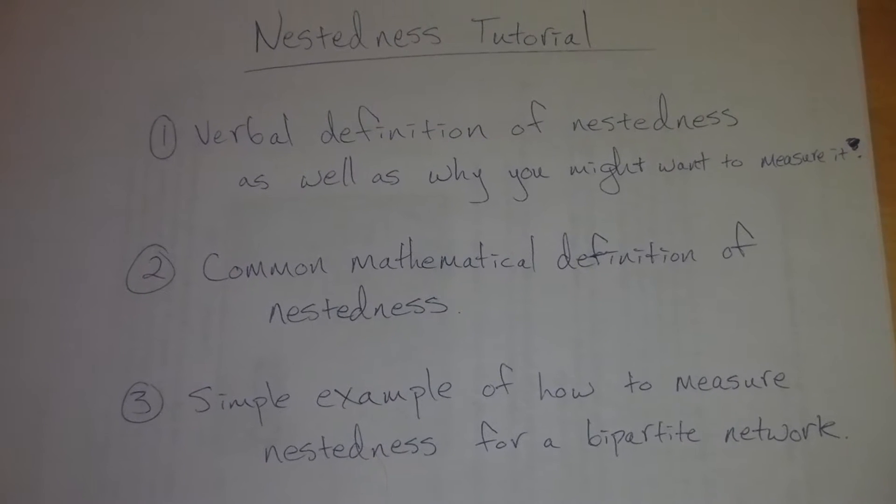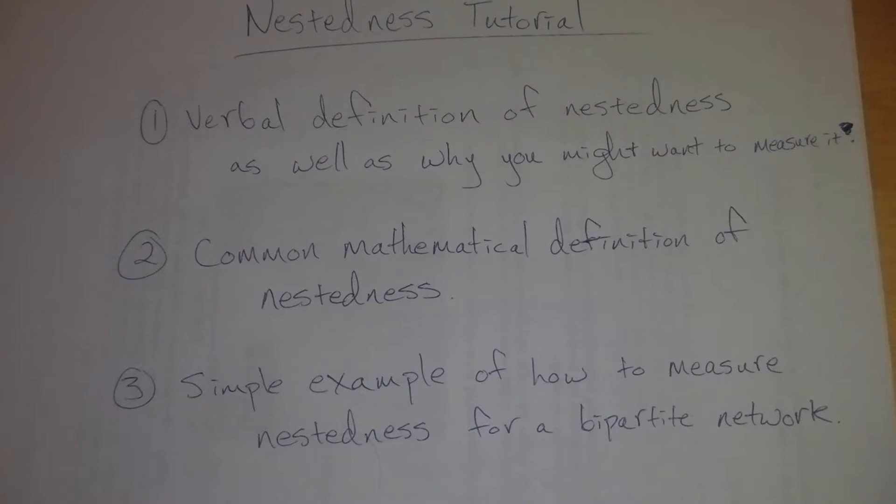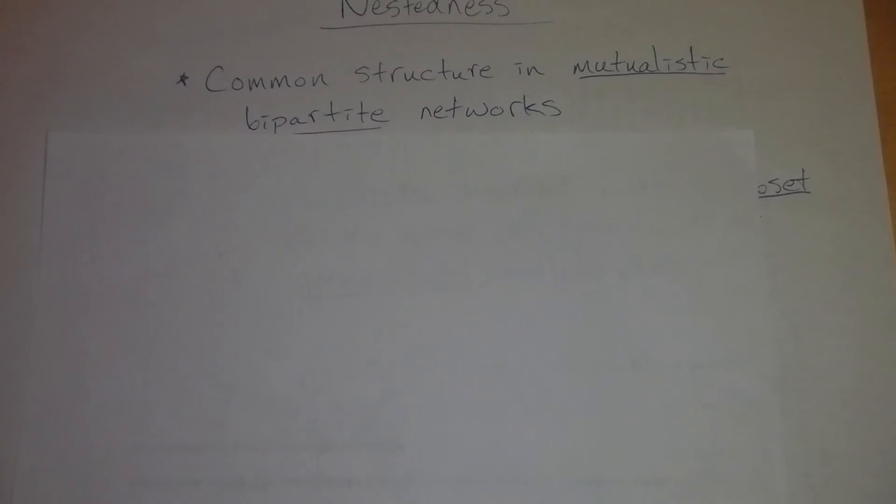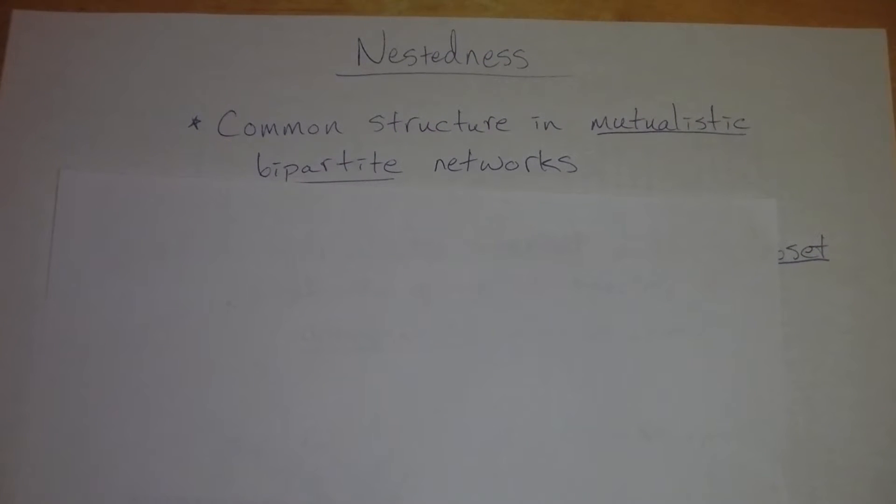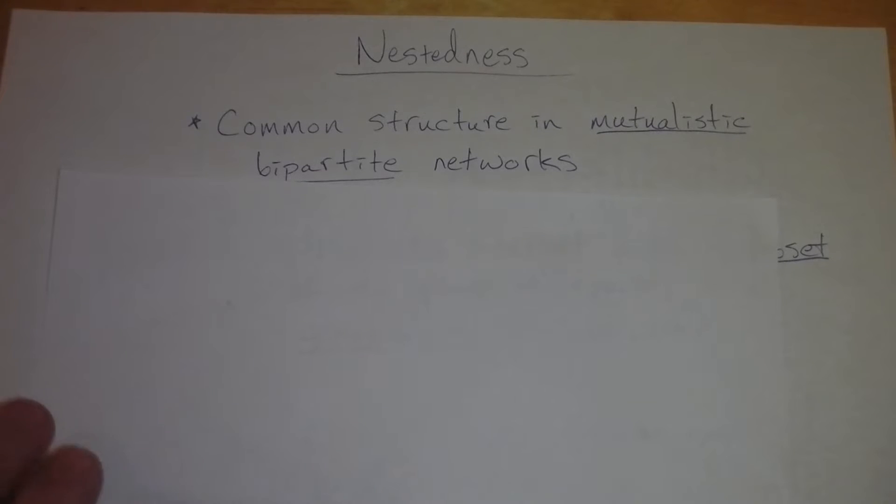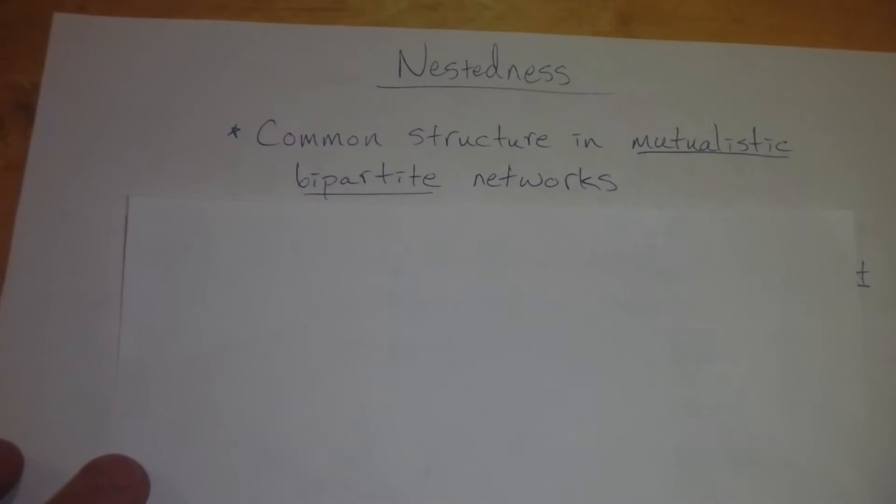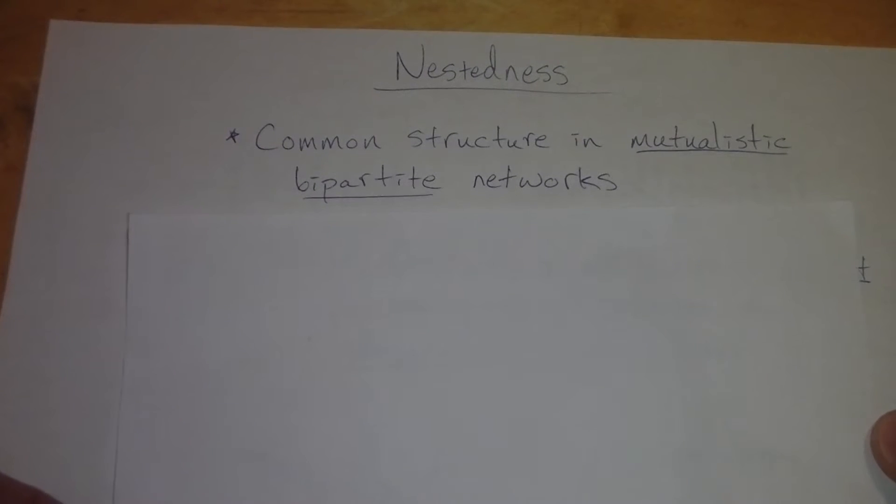I'm going to start off by giving you a verbal definition of nestedness, as well as why you might want to measure it. I'm going to follow that with a common mathematical definition of nestedness, and then another simple example of how to measure nestedness for a bipartite network. So let's first go over why you might want to measure nestedness. It's a common structure in mutualistic bipartite networks, and it has implications for the stability of these types of networks in particular.